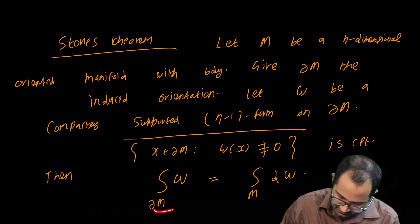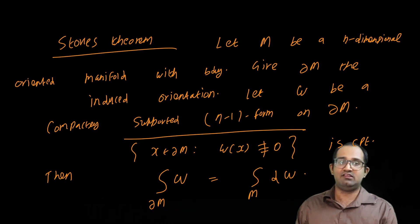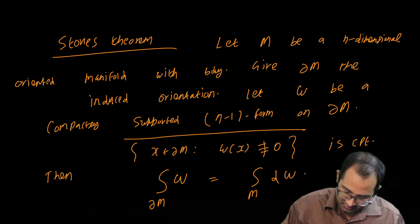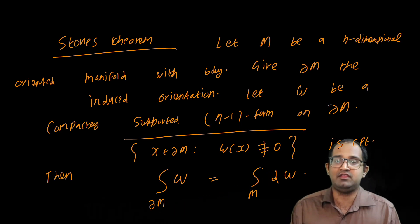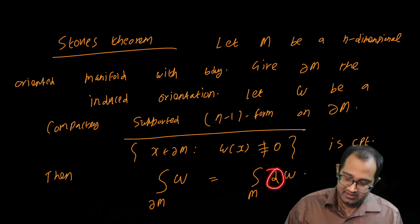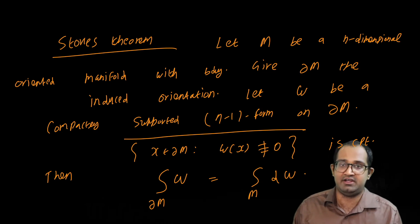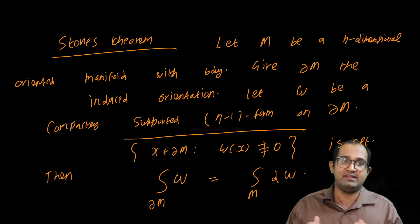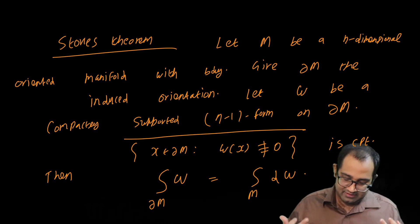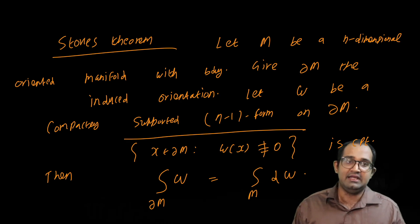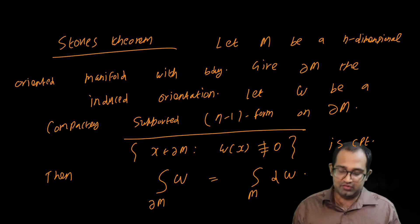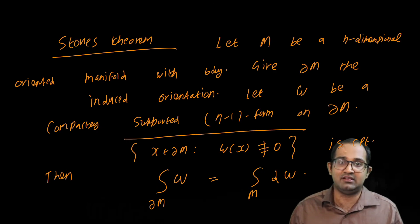The conclusion of Stokes' theorem is: when you integrate omega on the boundary of M, this is the same as integrating over M of d omega, the exterior derivative of omega. So the boundary here becomes a d inside — the boundary operator has been shifted into the form as an exterior derivative. This whole theorem is a generalization of various theorems in vector analysis. In the application section and the final assignment, I will give several exercises applying Stokes' theorem to prove various classical theorems and identities in vector analysis.